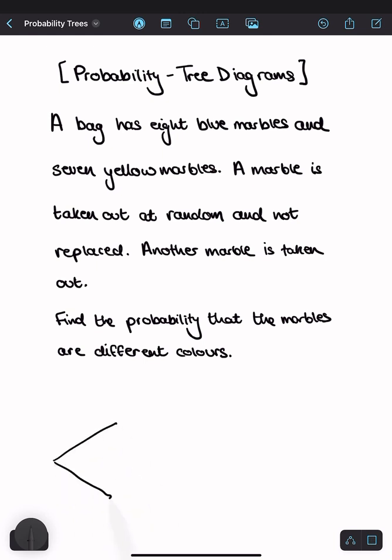For our first event, we can either pick a blue marble or a yellow marble. The total number of marbles at the start is eight plus seven, 15. And we know that there are eight blues or seven yellows.